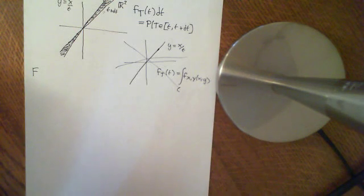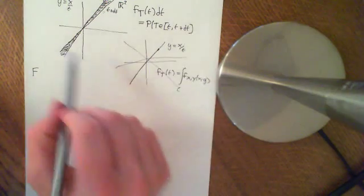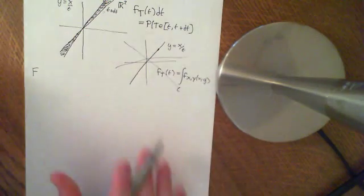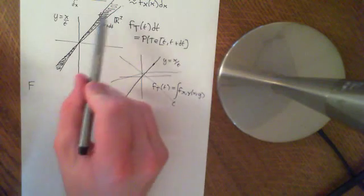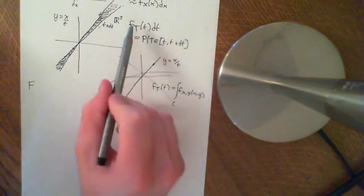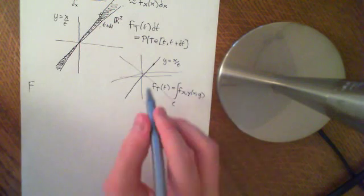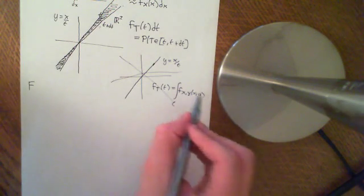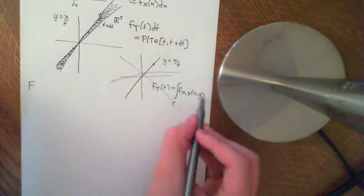Welcome back to the next part of this video. We've just agreed that this is not a good approach. This is a difficult calculation. You're going to have to be very careful when you construct what you need to integrate in order to try and calculate the PDF directly from the joint PDF of this distribution.